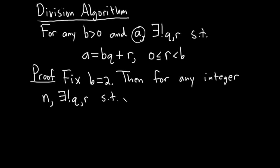we have the following. We have that n is equal to 2, that's our b, q, we don't know what that is, plus r, we don't know what that is, but we do know it has a restriction. It's strictly less than 2, that's our b, and greater than or equal to 0.